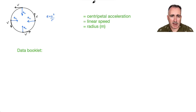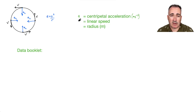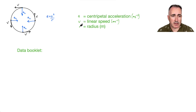To define everything: centripetal acceleration is A, in meters per second squared. V is the linear speed in meters per second — not meters per second squared, but meters per second. And R is the radius in meters.